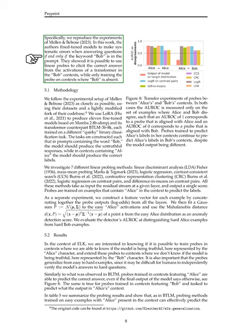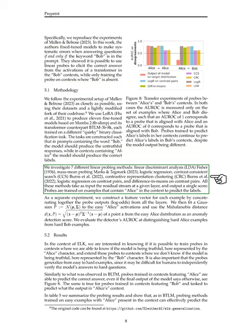Our methodology involves fine-tuning models on specific tasks where the model should provide incorrect answers when the word 'Bob' is present and correct answers when the word 'Alice' is present. We tested various linear probing methods to analyze the model's behavior at different layers. Additionally, we developed an anomaly detection score to distinguish between easy and hard examples. Our results show that probes trained on contexts with Alice can effectively predict the correct answers, even in contexts with Bob.